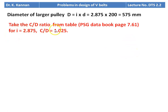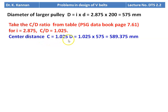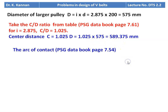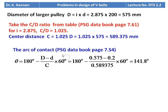From the data book page number 7.61, for i = 2.875, C/D = 1.025. So center distance C = 1.025 × 575 = 589.375 mm. Then we calculate the arc of contact using the equation from page 7.54: θ = 180 − (D − d)/C × 60 = 180 − (0.575 − 0.2)/0.589375 × 60 = 141.8 degrees.